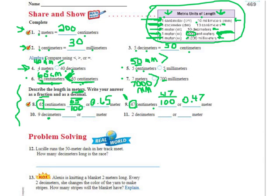This one is writing decimeters as meters. Looking at my chart, I'm going backwards. Instead of writing what's in front of the decimeters over 100, I'm going to write it over 10. The number in front is 9, so I write 9 over 10, or nine tenths, which I write as 0.9. Here's another one with decimeters changing to meters — the number in front is 2, so 2 over 10, or two tenths, that means 0.2.